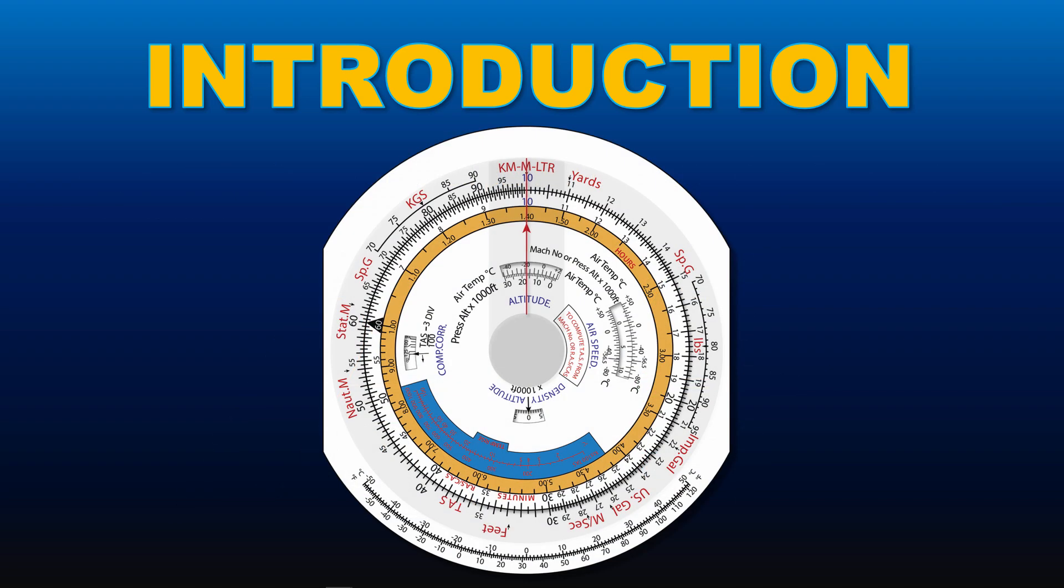To use CRP5 as the time, speed, and distance computer, we utilize the 60 index on the inner scale. Throughout this video, I will use the white line as shown on the screen to represent CRP5 inner and outer scale. Below the line represents the inner scale and above the line represents the outer scale.